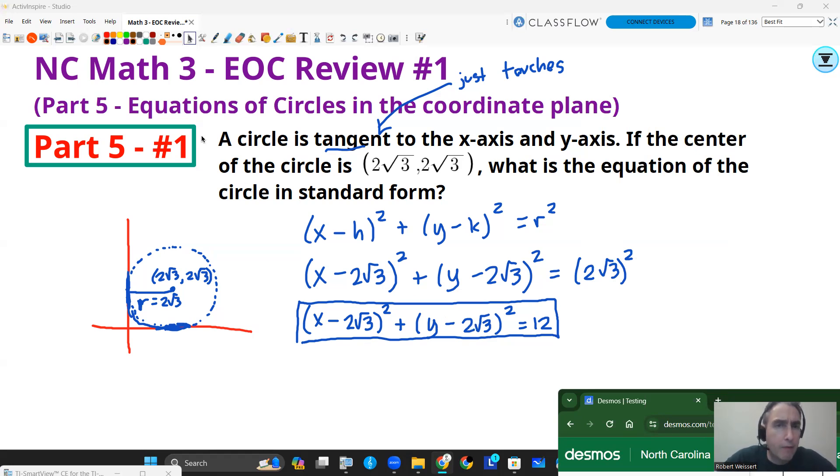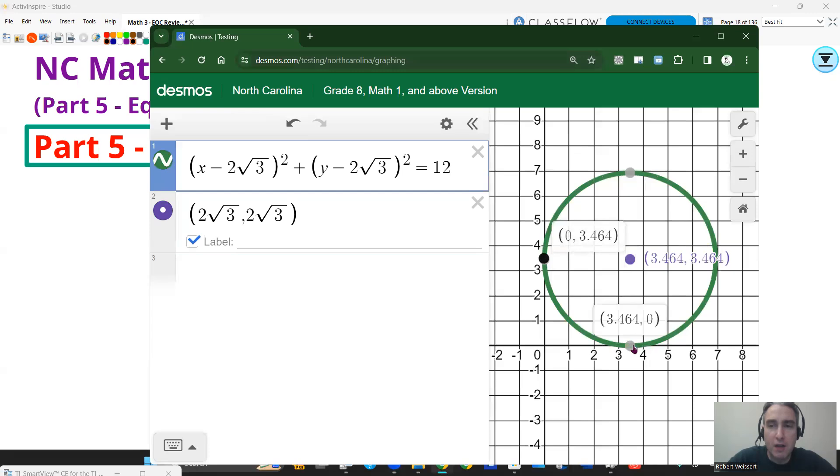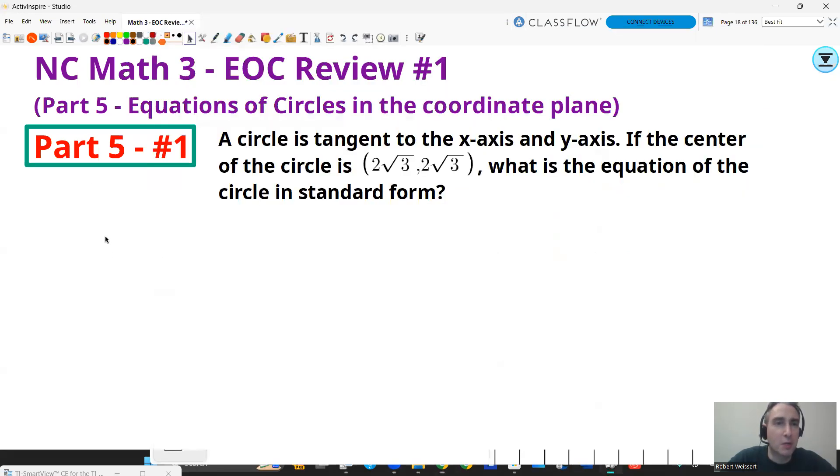I want to show you how this looks on the graph if you were to graph it. So here's the picture that I had drawn. Now, you're going to see it's going to give you a decimal approximation of 2√3 there as your center. But again, that pretty much hits it right there. That radius is going to be that same distance. 2 times the square root of 3 is about 3.464. So there's your equation. There's your circle. That's what it means to be tangent, just hitting the axis right there. Let's go on to the next question.